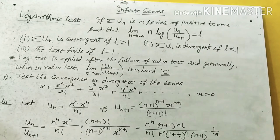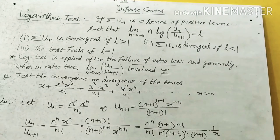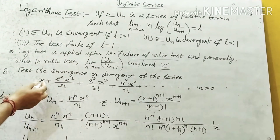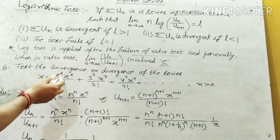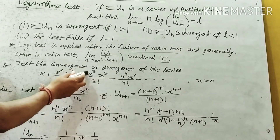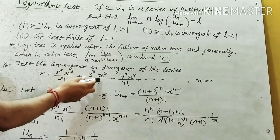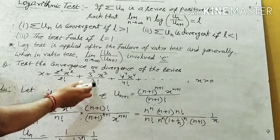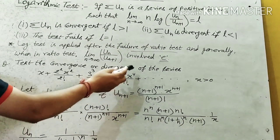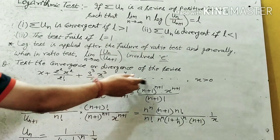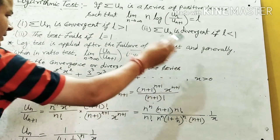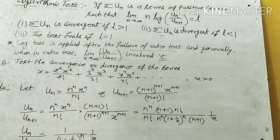Now, test the convergence or divergence of the series: x + 2² · x² / 2! + 3³ · x³ / 3! + 4⁴ · x⁴ / 4! + ... and so on, where x is greater than 0.